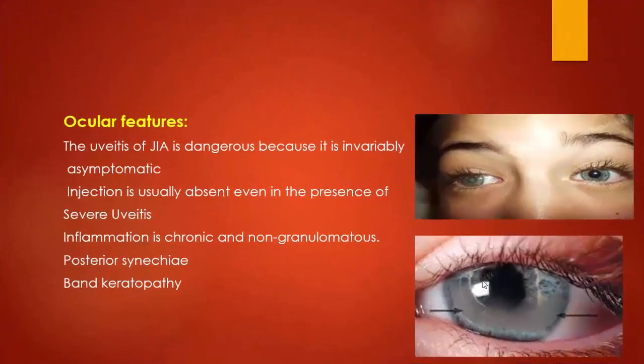The ocular features of juvenile idiopathic arthritis are mainly characterized by uveitis, which is dangerous because it is invariably asymptomatic. The usual ciliary injection is absent even in the presence of severe uveitis, so the patient presents to the physician late. Inflammation is chronic and non-granulomatous, and usually the patient presents with complications like synechiae and band keratopathy, as well as complicated cataracts.